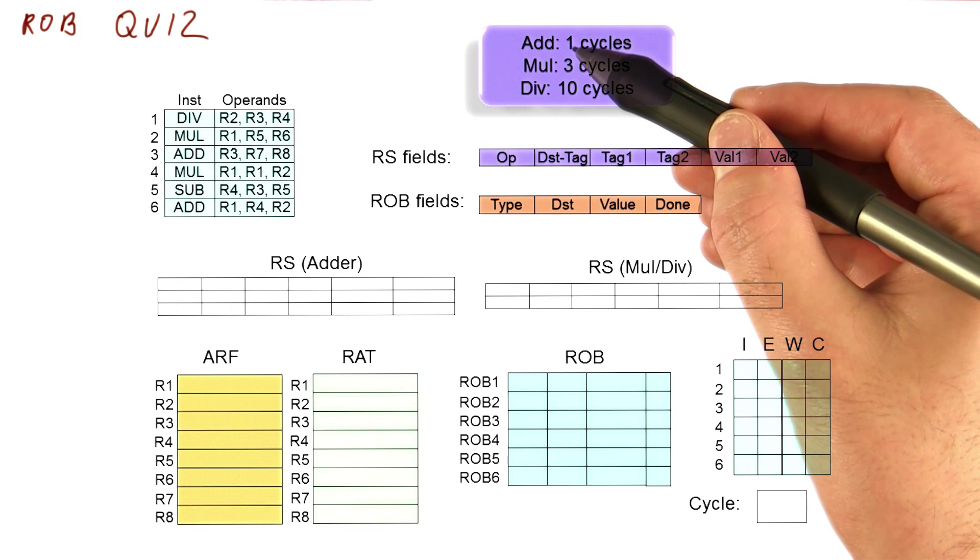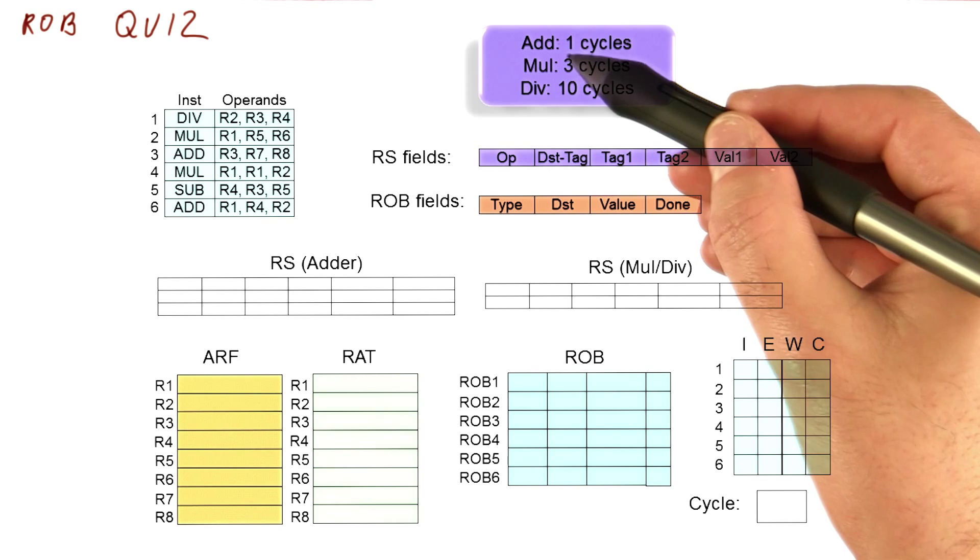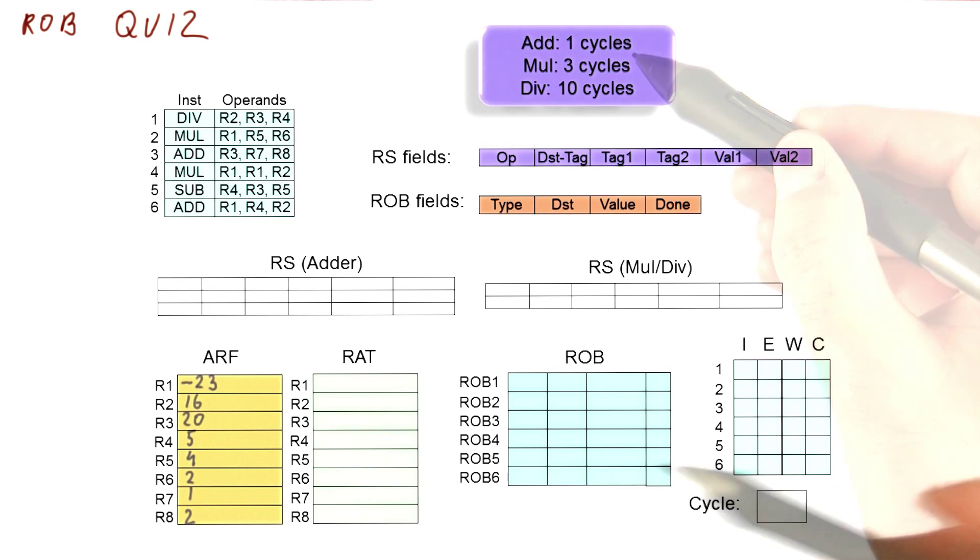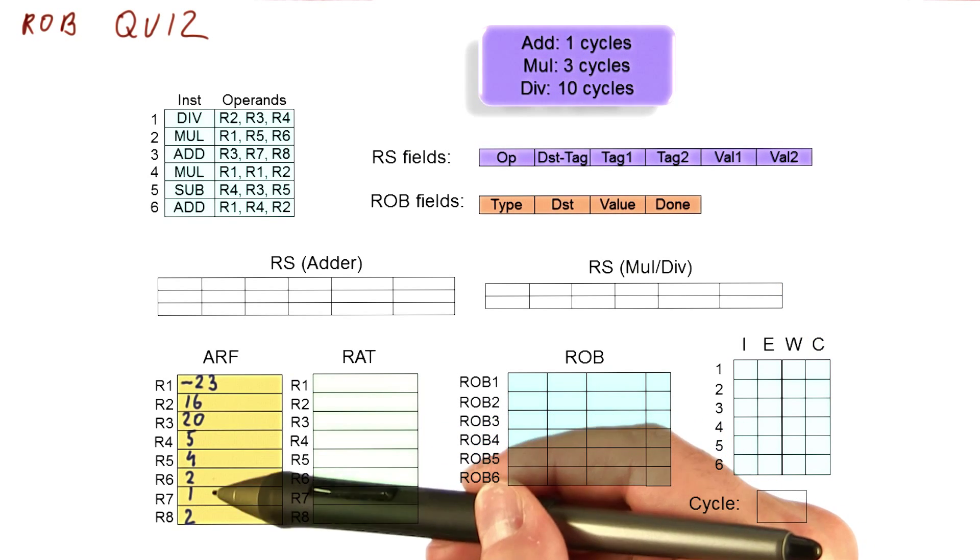So if an add begins executing in some cycle x, because it takes one cycle to do that, it's going to be able to broadcast the result in cycle x plus one. The initial values of the registers are these.